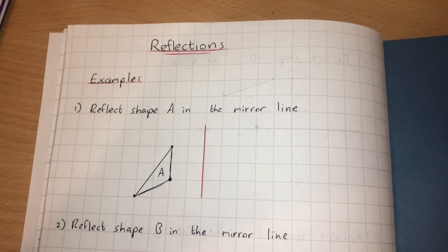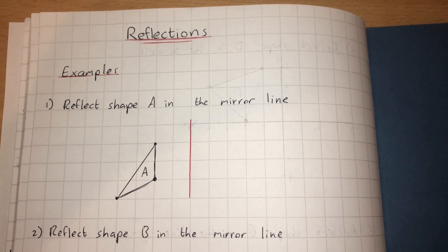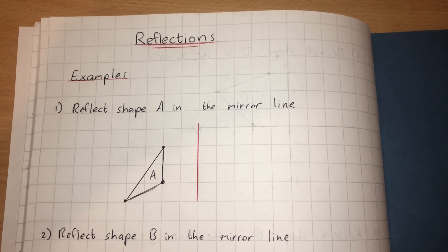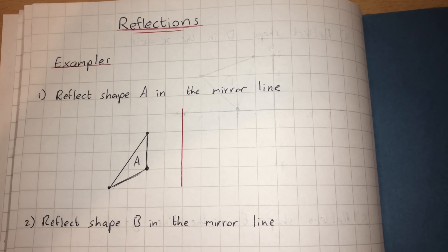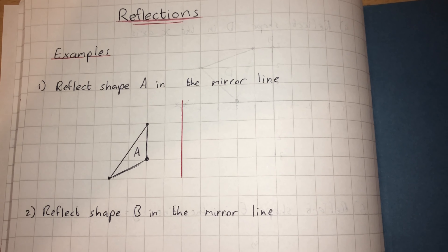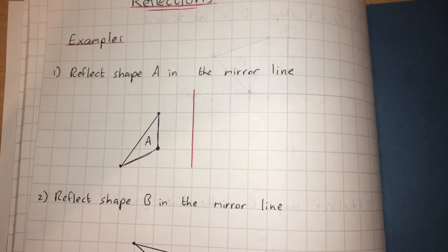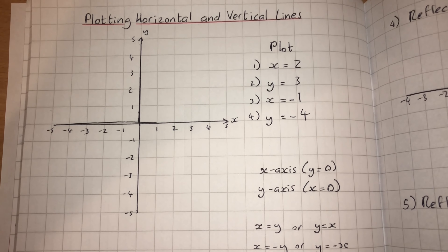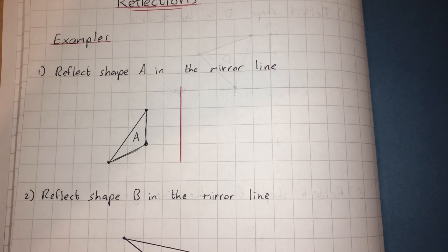In this series of videos I'm going to look at four different types of transformations: reflections, rotations, translations, and enlargements. Today we're going to start with how we tackle questions involving reflections. You also need to be able to recognize what type of transformation you may be looking at and how to describe it, so we'll cover that as well. Before we get into reflection questions, I'm going to do a quick recap on how we plot horizontal and vertical lines using an x-y axis.